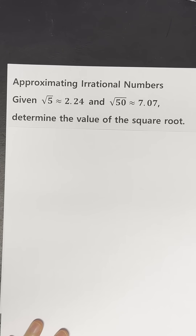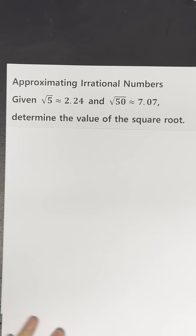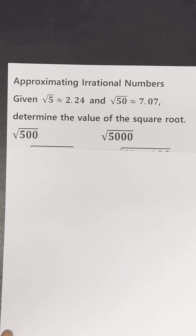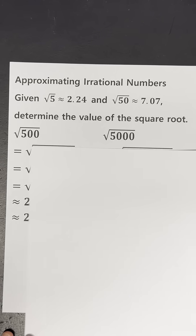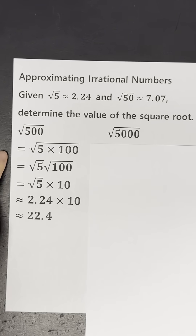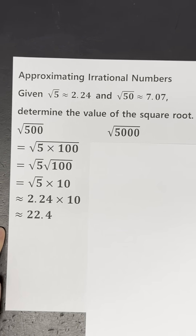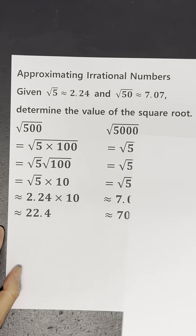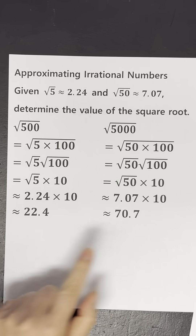Here, we'll be approximating irrational numbers. It is easy to find cases where there are natural numbers in the square root, such as 500 or 5000.